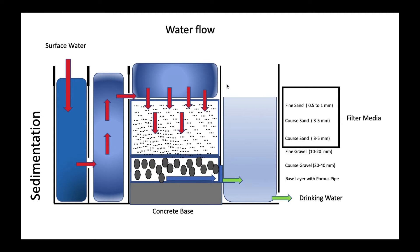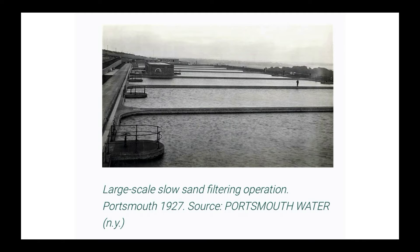Head loss acts as an indicator of when to clean the slow sand filter. Ideally, head loss is around 90 cm to 1.7 meters. When head loss increases — meaning the water surface rises — it indicates that effective filtration is decreasing and water is flowing through without proper filtration, signaling that maintenance or cleaning is required. Slow sand filters can range from 100 to 2,000 square feet, making them scalable at both large and small scales.